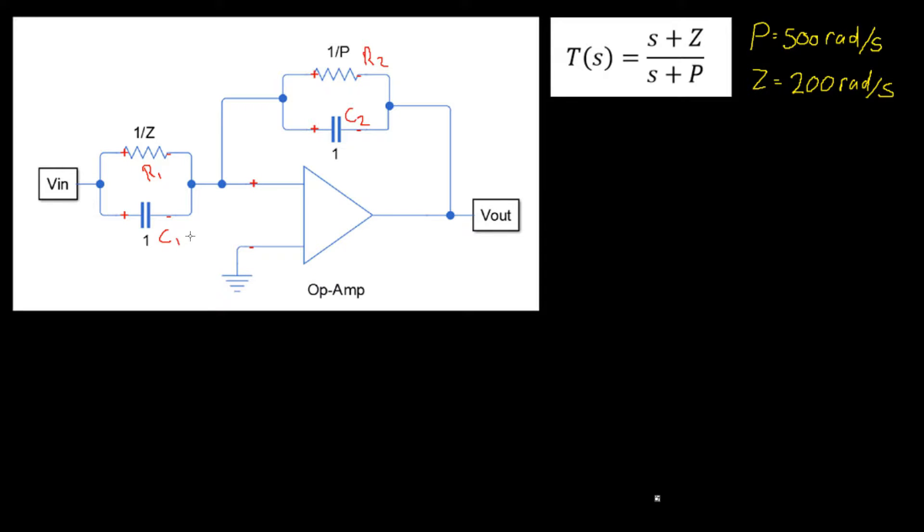We start with one of our capacitor values since it has a value of 1. We can then scale that value down to be within our range. Keep in mind as we scale capacitors down we must also scale resistors up by the same gain.